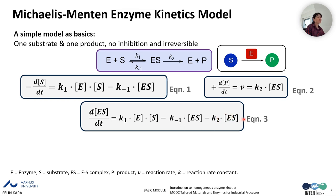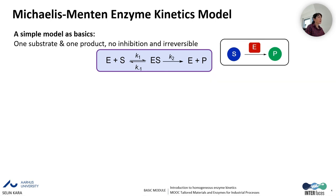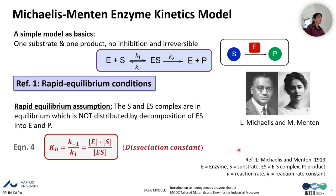For simplification, we can rewrite equation number three by factoring out the ES complex. Next, we learn the two assumptions generated to understand enzyme kinetics. In 1913, Michaelis and Menten came up with the rapid equilibrium conditions assumption, which states that the substrate and the ES complex are in equilibrium, undisturbed by the decomposition of the ES complex into the free enzyme and the product.